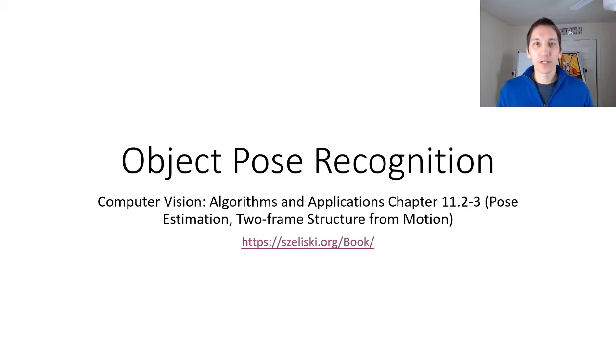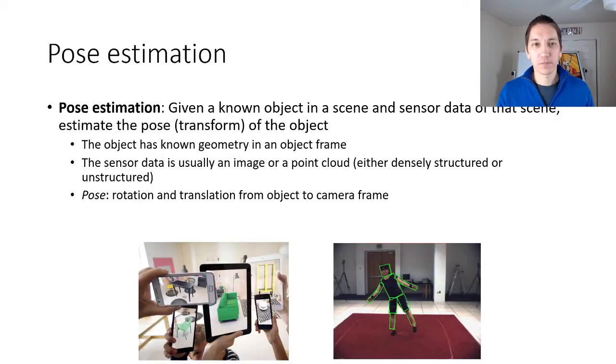Hello folks, today we'll be talking about object pose recognition and this will be the subject of CVAA 11.233. The idea of pose estimation is that we have a known object in a scene and we have sensor data of the scene and we want to estimate the pose of the object.